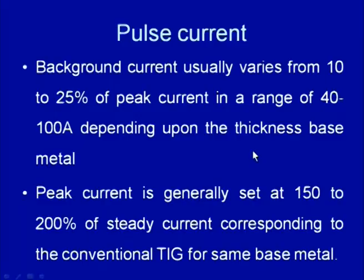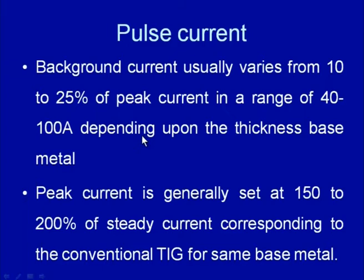In general, the background current usually varies from 10 to 25 percent of the peak current, in the range of 40 to 100 amperes, and further depends upon the thickness of the base metal to be welded. Some ratio is maintained between the base current and the peak current such that the arc is stable enough and lower heat is generated for solidification of the weld metal. The peak current is generally set at 150 to 200 percent of the steady current corresponding to the conventional TIG process for the same base material.